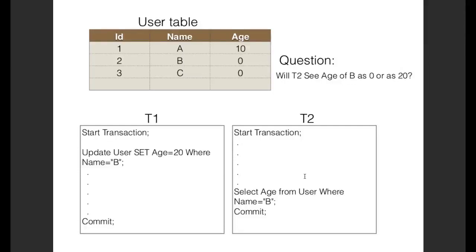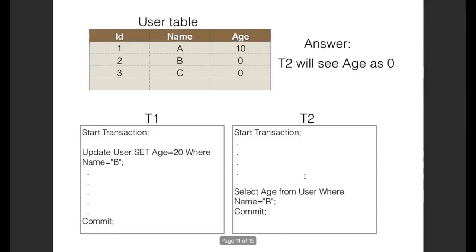MySQL uses the REPEATABLE READ isolation level by default if none is specified. Since we have not specified any isolation level, we can assume it will use REPEATABLE READ. In REPEATABLE READ isolation, a transaction is not able to read a value updated by another transaction until that other transaction has actually committed. So in this case, T2 will not be able to read the updated value of b and will get the age of b as 0. We will close here and move on to the next videos where we cover each isolation level in much more detail. Stay tuned.